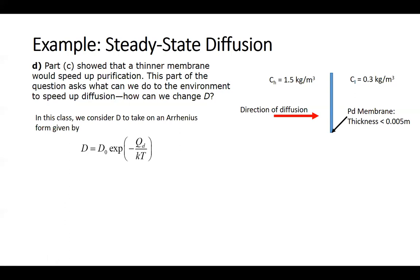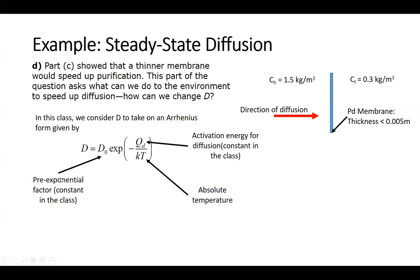In this class, we're going to consider D to take on an Arrhenius form given by D equals D naught times e to the negative Q_d over kT, where Q_d is the activation energy for diffusion, which is also considered to be a constant in this class.